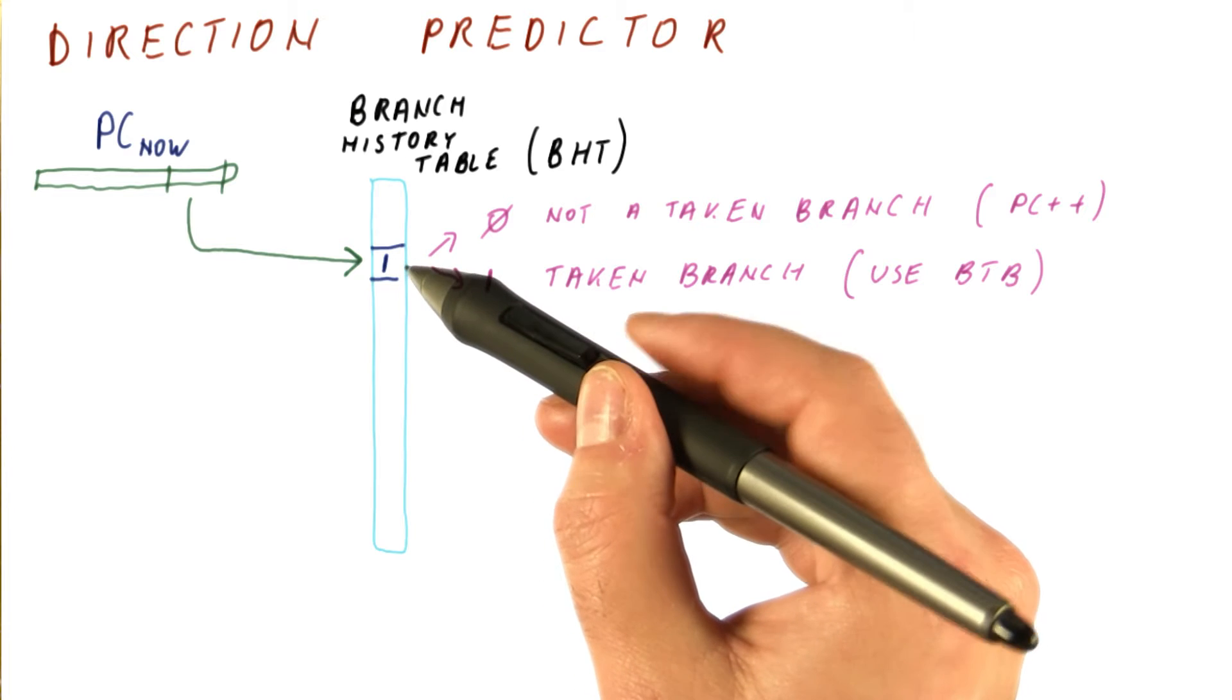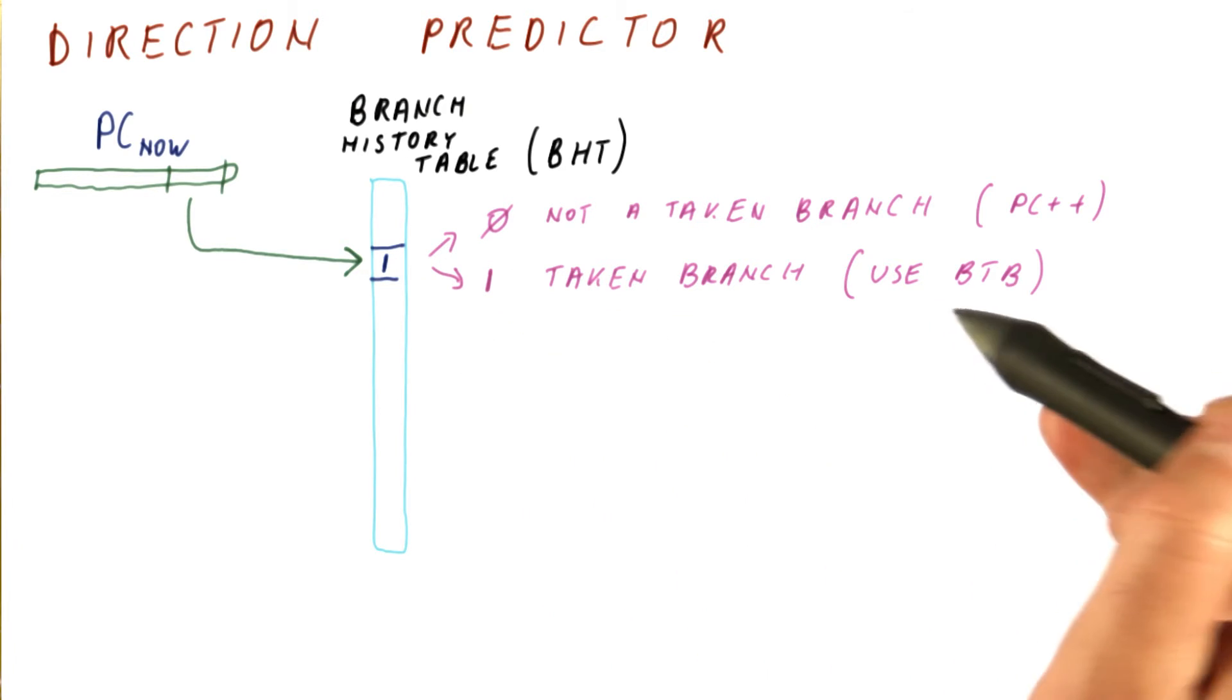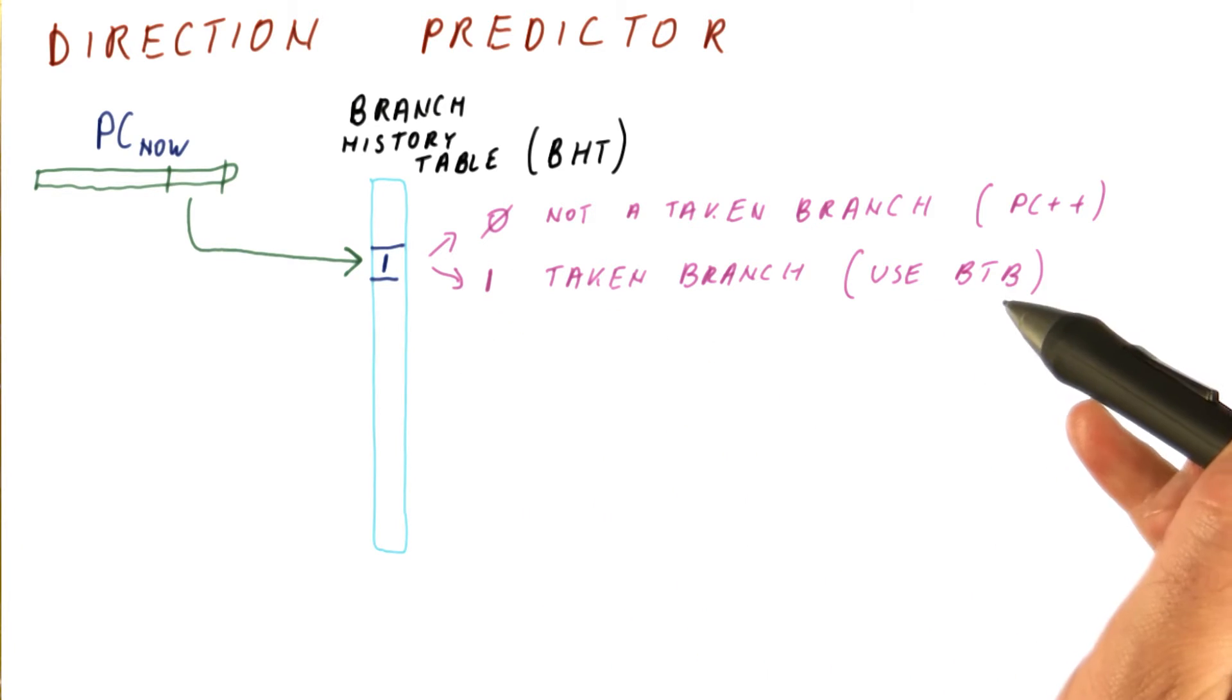Just like we were updating the BTB, we can update this once we resolve the branch. If we resolve to a taken branch, then we put a one here and we write the destination address into the BTB.